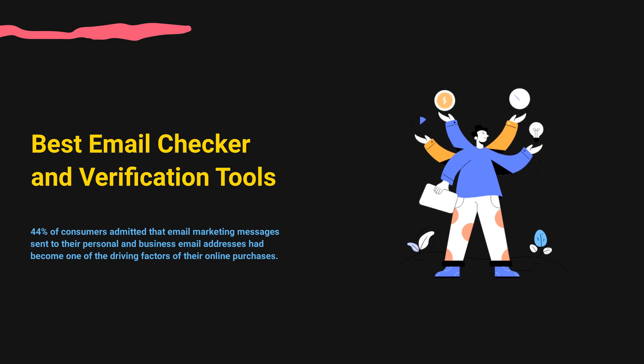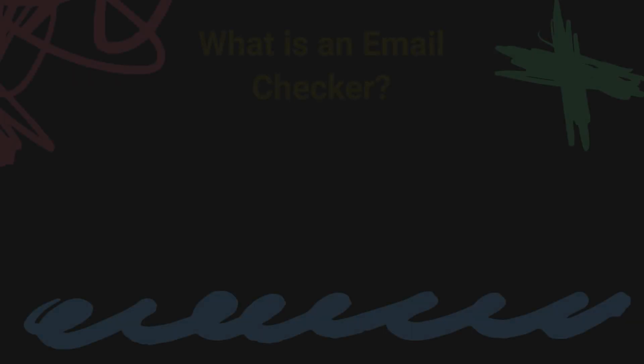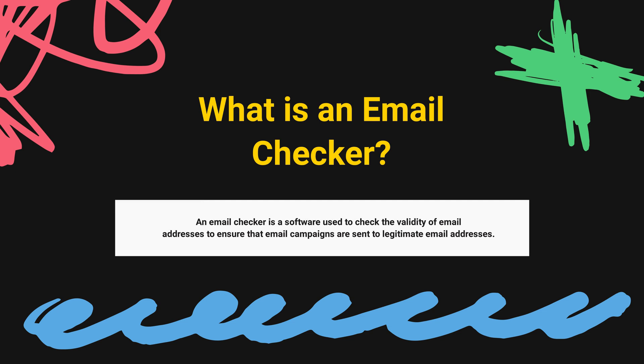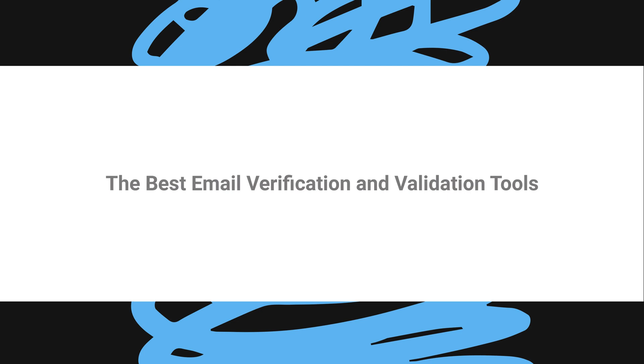You'll also learn how to choose the right tool for your needs and get a step-by-step guide on how to use it to verify your email list. So, what is an email checker? An email checker is a software used to check the validity of email addresses to ensure that email campaigns are sent to legitimate email addresses. Email checker allows users to upload email lists to its platform to verify the list of emails in several logical ways. Let's start by reviewing the best email checker tools you can use to verify and clean up fake, inactive, disposable, or temporary email addresses to increase the deliverability score of your email marketing campaigns.